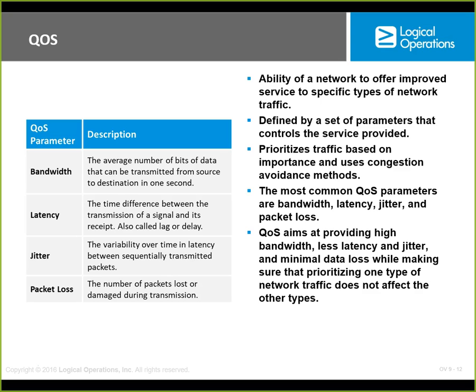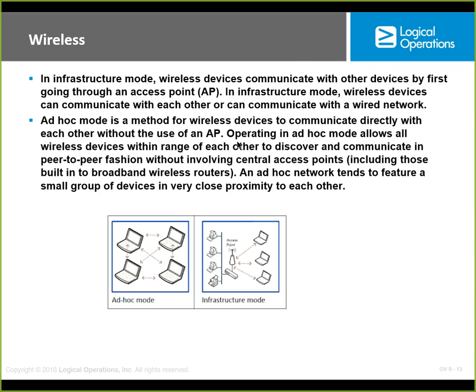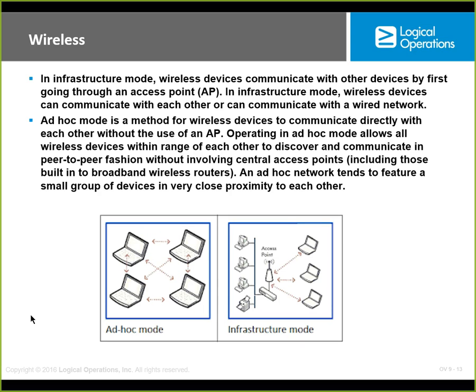The common QoS parameters are bandwidth (number of bits), latency (delay — the time difference between transmission and receipt), jitter (inconsistent latency that causes audio issues like a wah-wah effect), and packet loss (packets damaged during transmission). QoS uses congestion avoidance methods and prioritizes traffic based on importance.